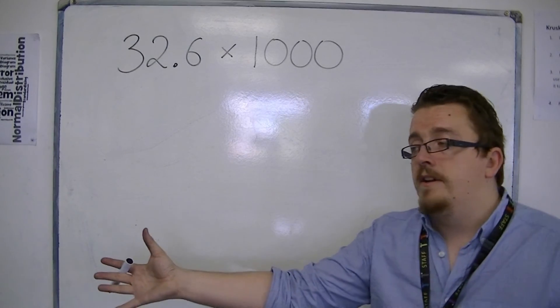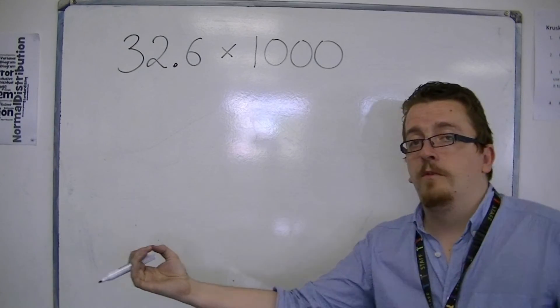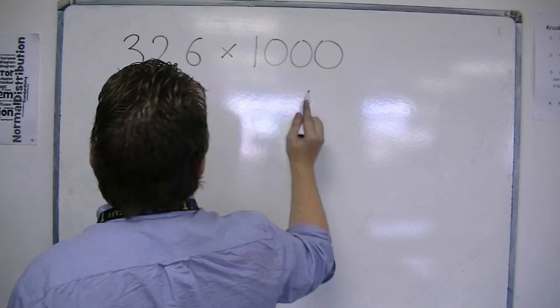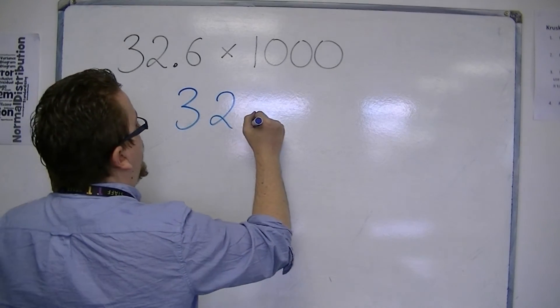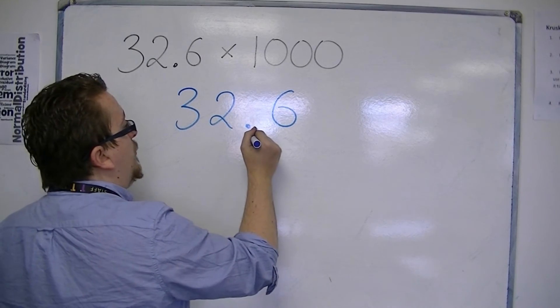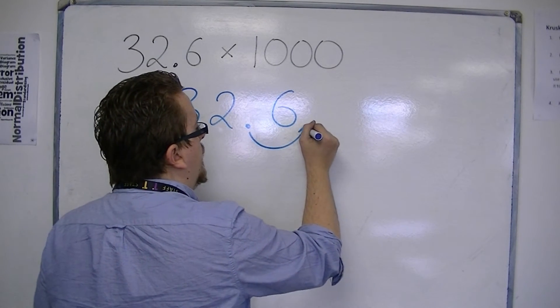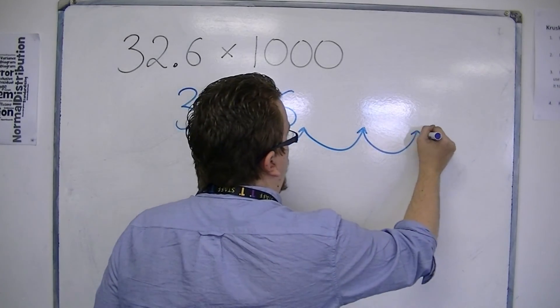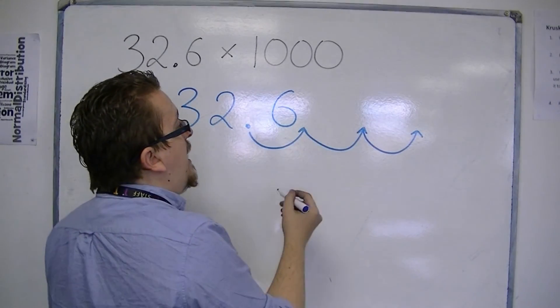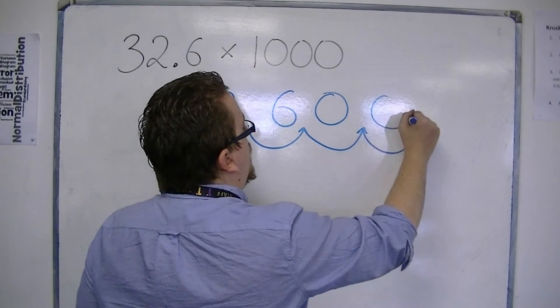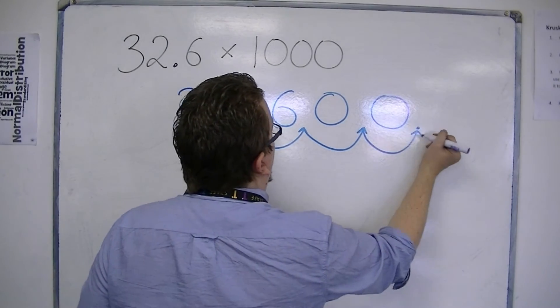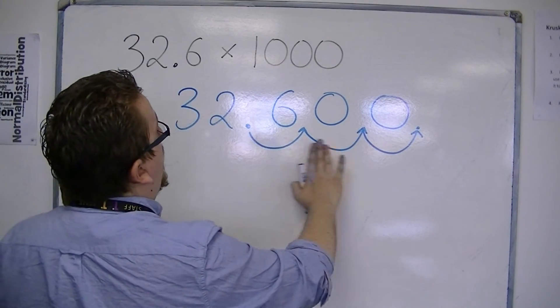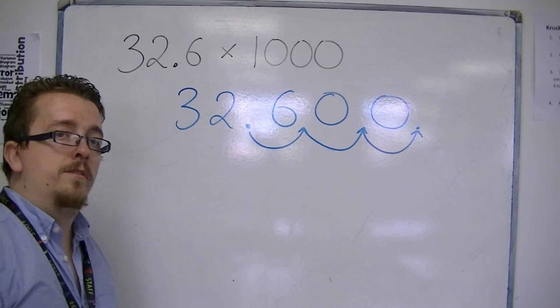It moves to the left if you divide. So, we know that the decimal point must move to the right. And we know it must move to the right three times, because we have three zeros. So, 32.6, the decimal point must move to the right three places. So, it's one, two, three. But what are these gaps? The gaps are going to have to be filled with zeros. So, what we end up with is 32,600, as our answer.